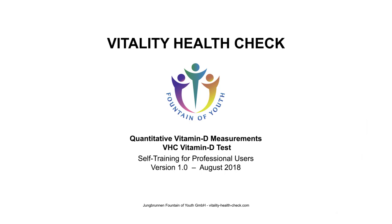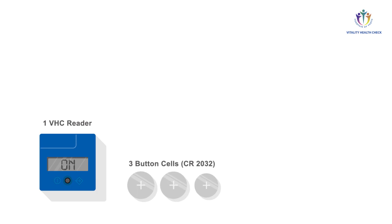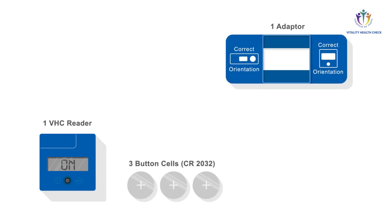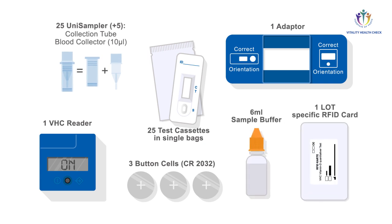VHC Vitamin D test components provided to perform quantitative vitamin D measurements: VHC reader, three button cells, adapter, VHC vitamin D test cassettes, unisampler, sample buffer, and lot specific RFID card.